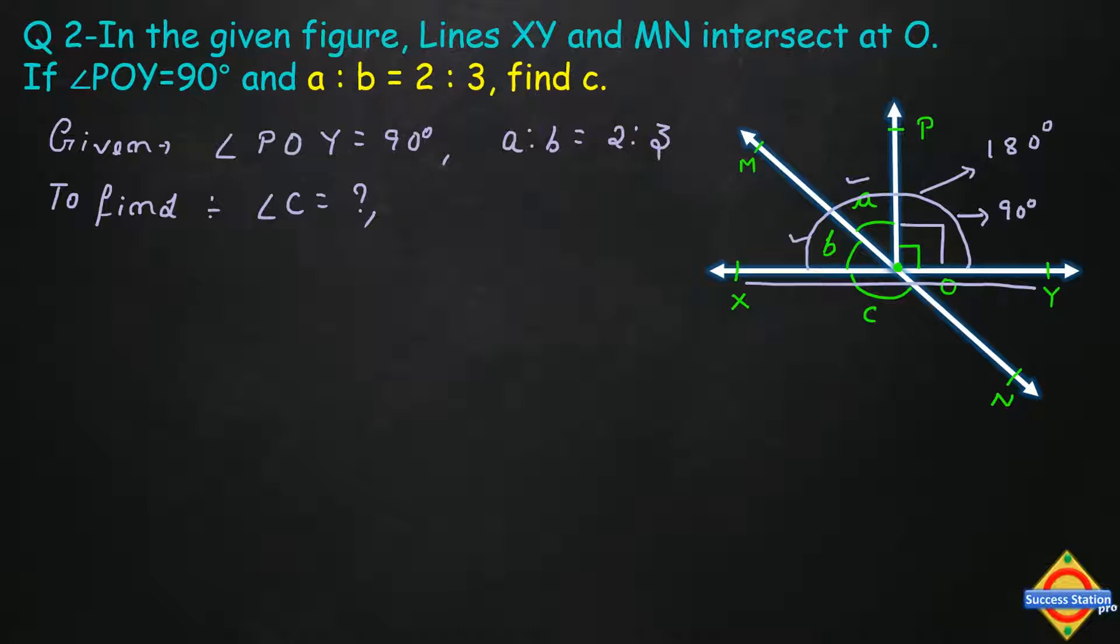Now look at this half portion, that is angle POY. If it is equal to 90 degrees, then the other half portion, that is angle POX, will also be equal to 90 degrees. If the total angle value is 180 and one half portion angle POY equals 90 degrees, then the other half portion will also equal 90 degrees, so that their sum equals 180 degrees.